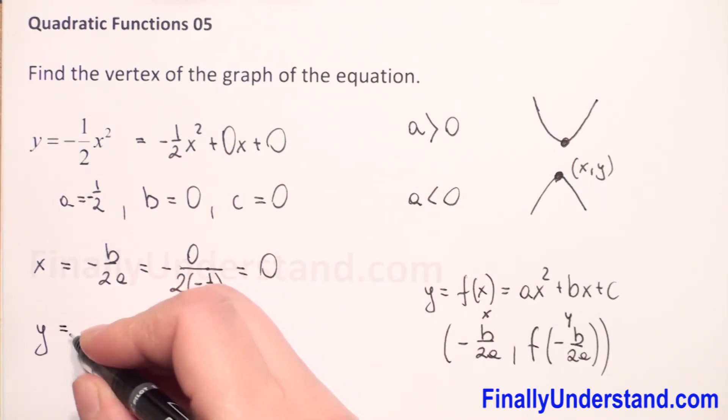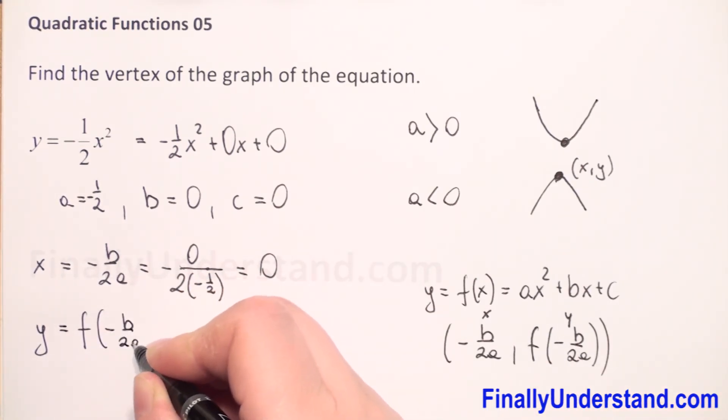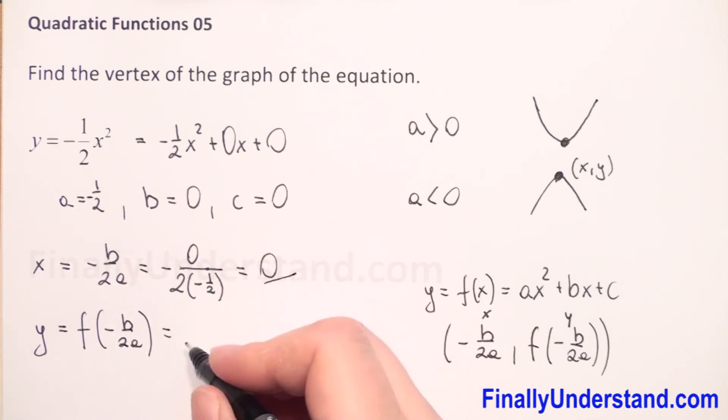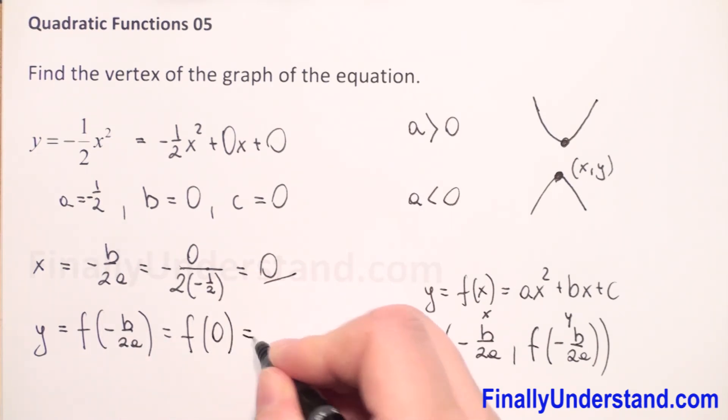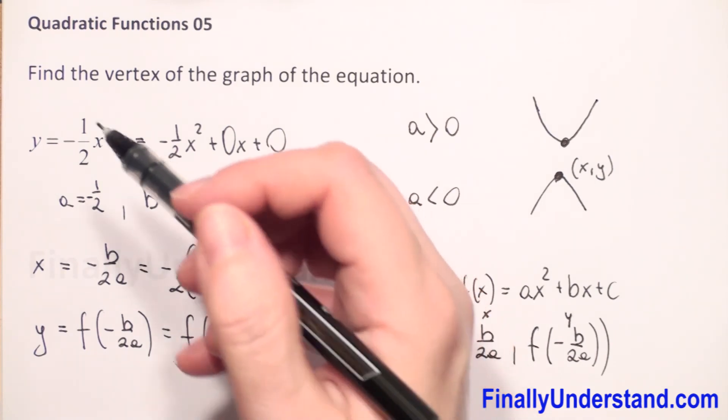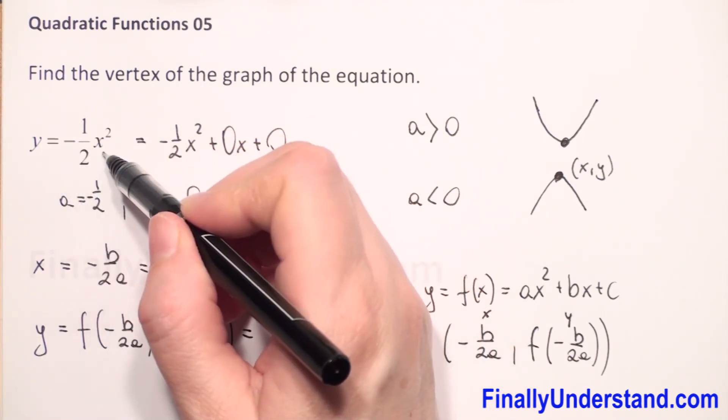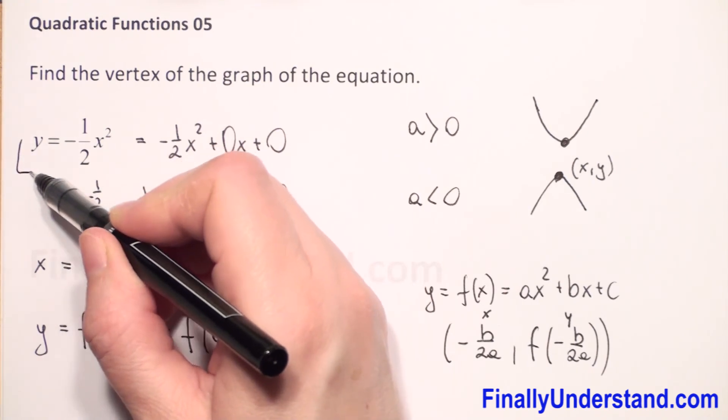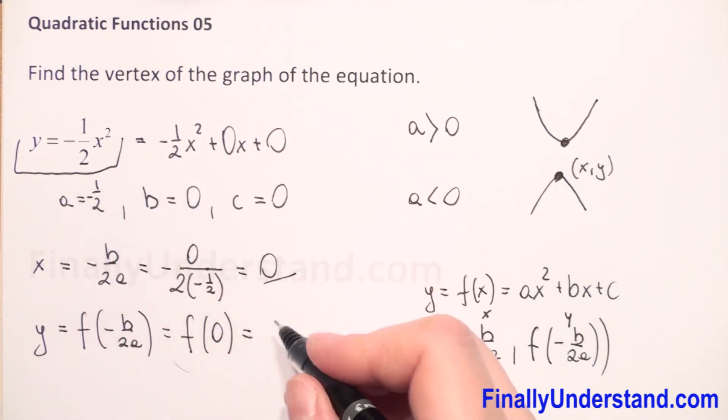Now we need to find the y coordinate. y is f of negative b over 2a. We found that negative b over 2a is zero, so we substitute this. Now it will be f of zero. We have to find the value of our function for zero.